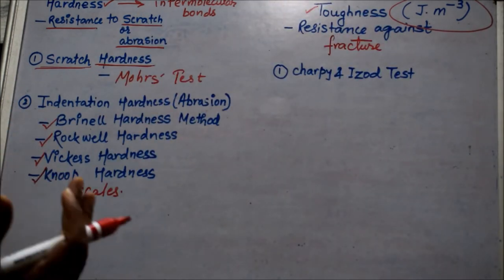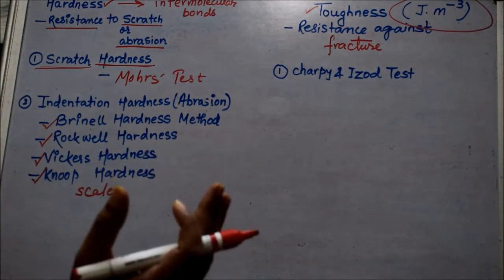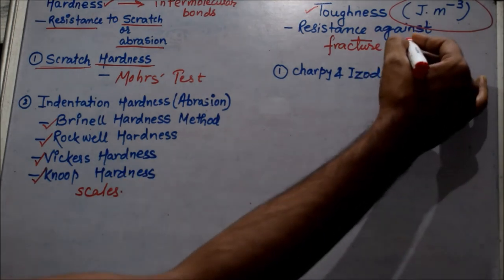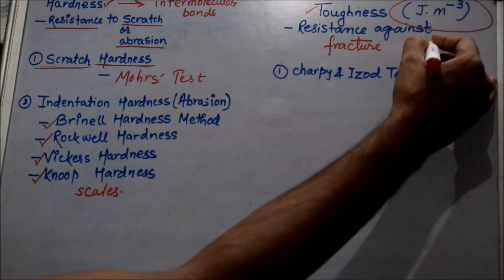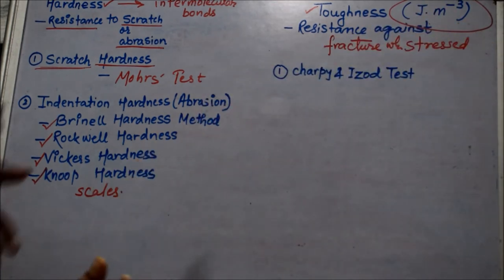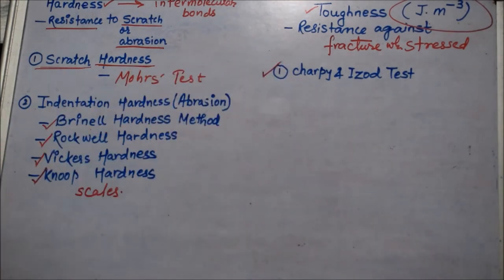We can have the simplest definition of toughness: it can be defined as the material's resistance to fracture when it is stressed. So whenever stress is applied, if the material has resistance against fracture, it will be considered as toughness. A very famous test that is carried out to measure toughness is the Izod and Charpy test.